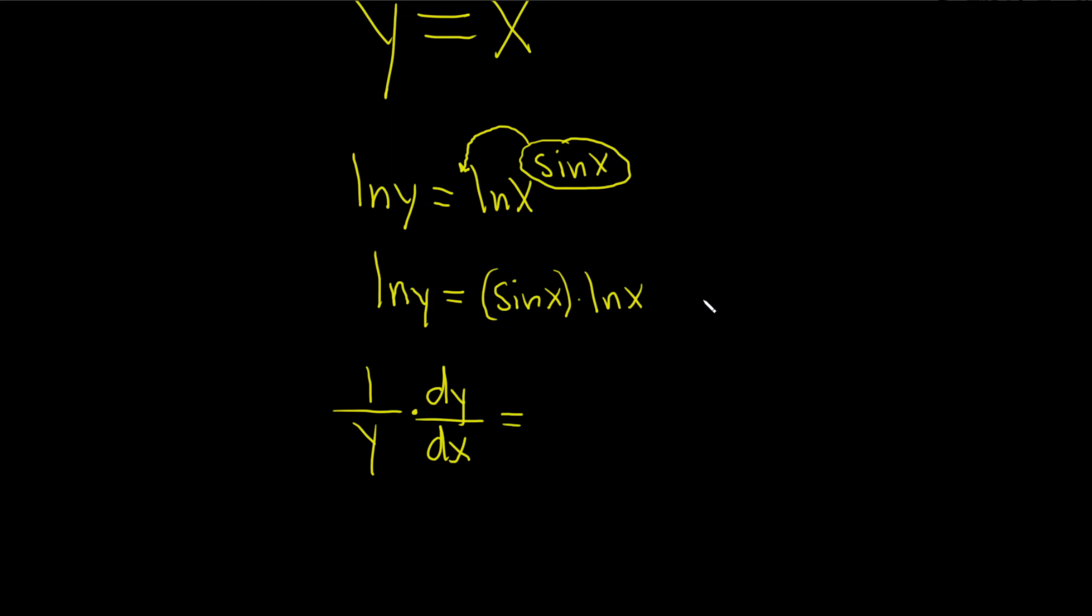Here we have to use the product rule. Recall the product rule says, if you have two functions, say f and g, and you're multiplying them, and you want to take the derivative, think of f as your first function and g as your second. It's the derivative of the first times the second plus the first times the derivative of the second.